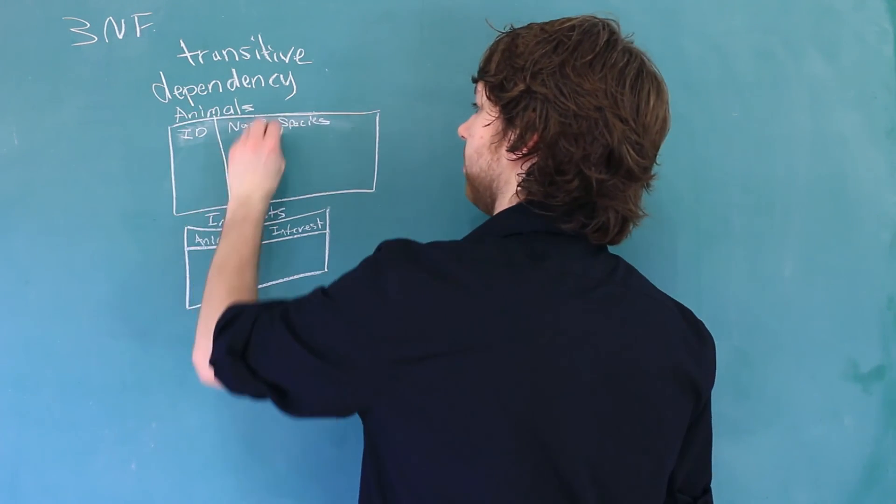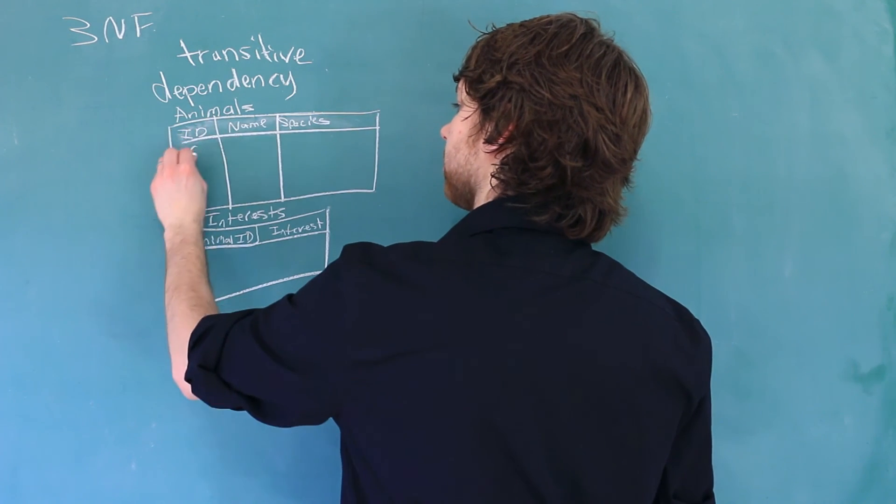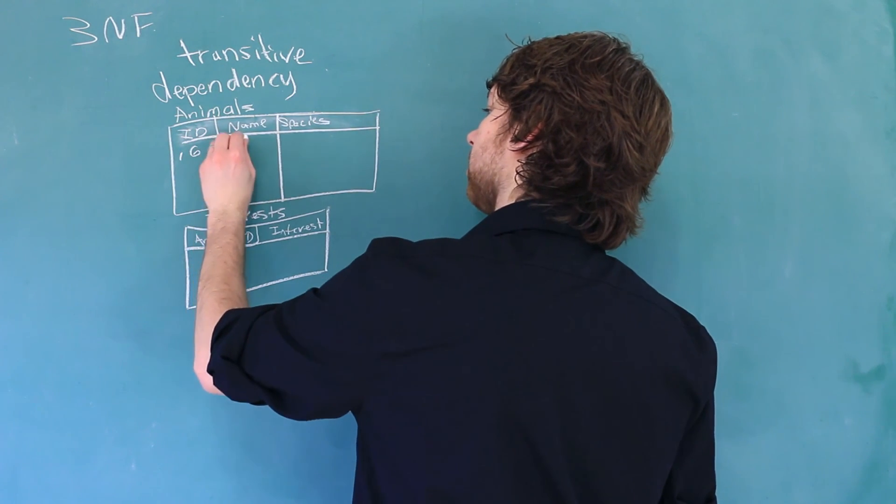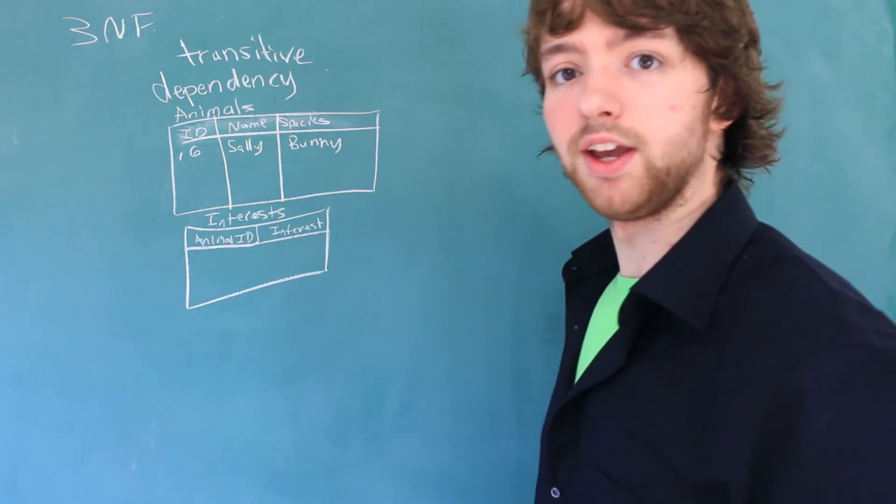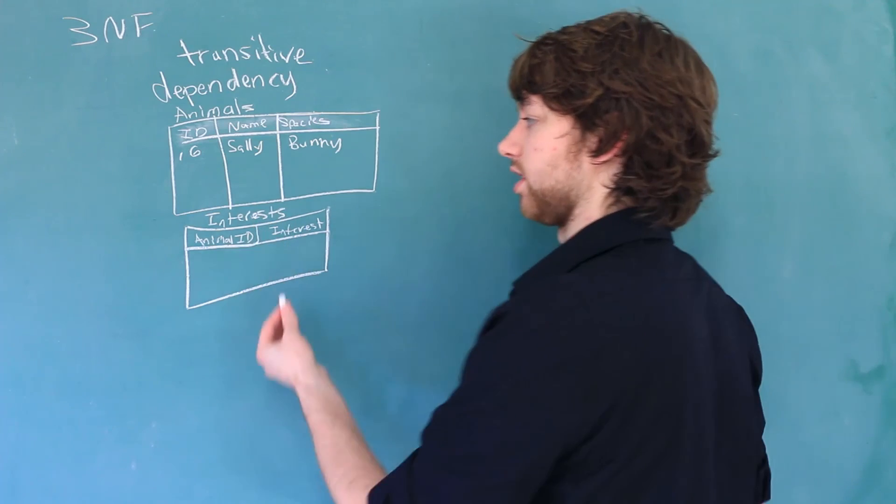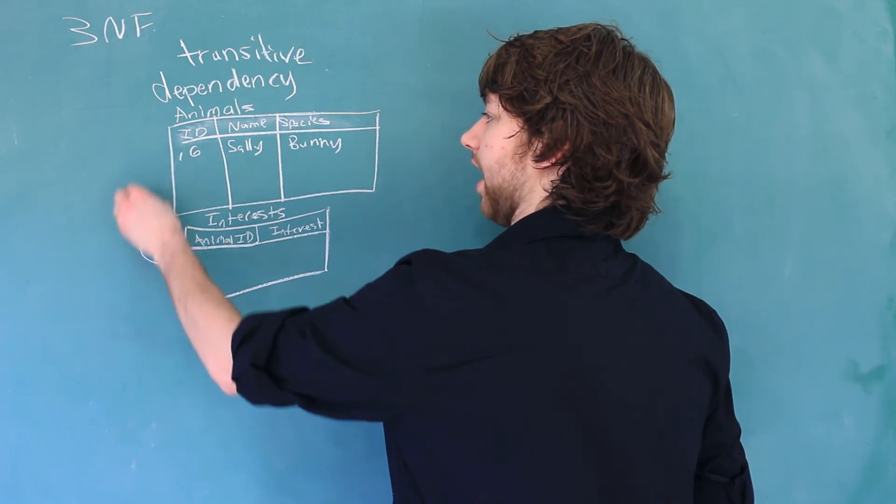So the columns might be ID, name, species. And then let's give some data for this. So we'll have an animal with the ID of 16 named Sally, and the species will be bunny.